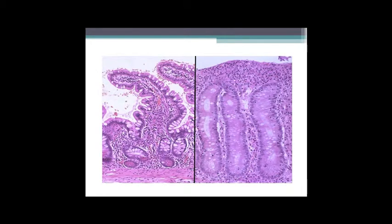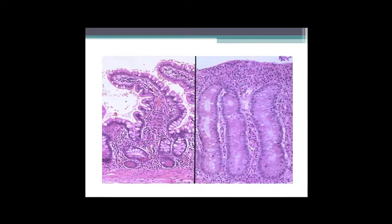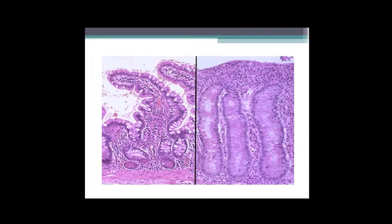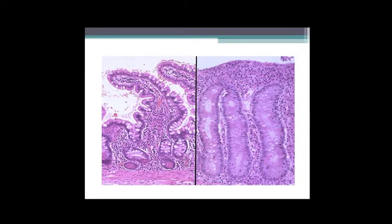This is a normal small bowel where you get these normal finger-like projections. With exposure to gluten you get damage, you get increased sensitized lymphocytes, you get damage to the bowel wall, and you get flattening of the lining of the small bowel.